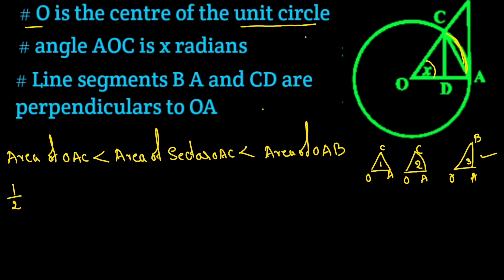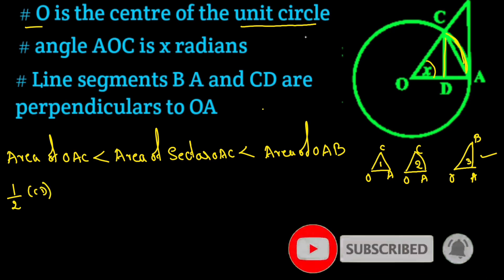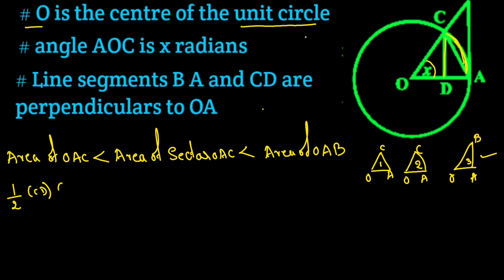The height of triangle OAC is CD, and the base is OA. The area of the sector formula is simple: if the angle is x, it is x divided by 2π times π r squared. Since the radius OA is given, this simplifies to x by 2 times OA squared.